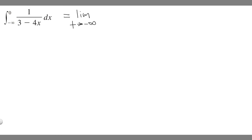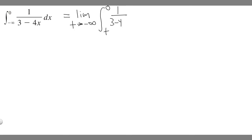So the limit as t approaches negative infinity — and then what you want to do is just rewrite your integral, but you're just going to replace the negative infinity with the variable you chose. Essentially, t is going to approach negative infinity, and we just rewrite our integral with t instead of the negative infinity.